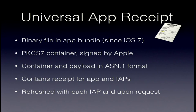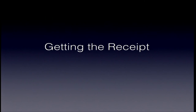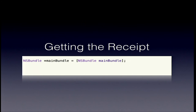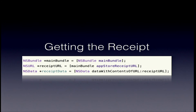Usually apps have this receipt. There are some cases where they don't — like if you do build and run in Xcode, there's no receipt because it didn't come from iTunes. Another scenario is if the user restores the app from a backup, they might get an old receipt. In both cases, you can ask iTunes for an updated receipt. To get the receipt is fairly simple: you get the main bundle, get the App Store receipt URL property, and instantiate the receipt data from that URL.